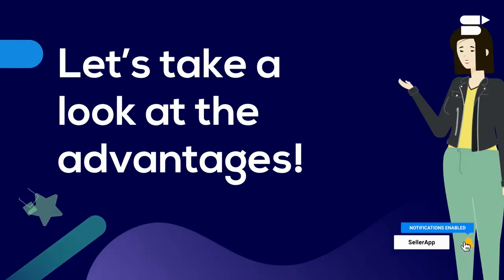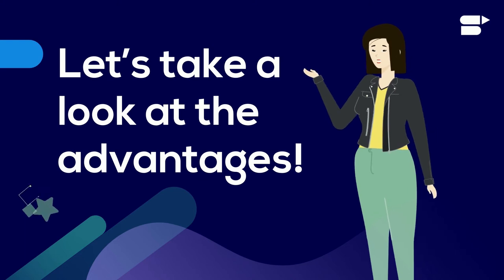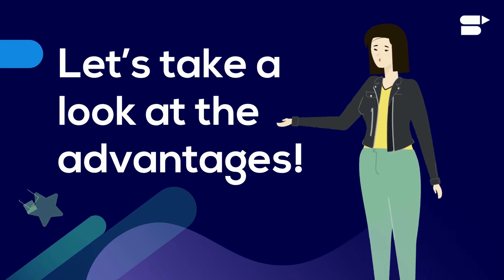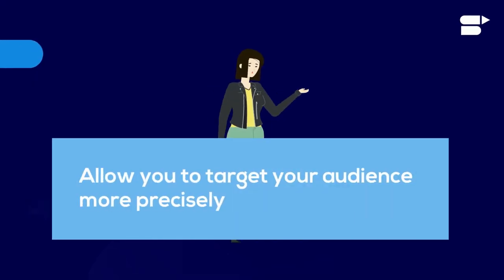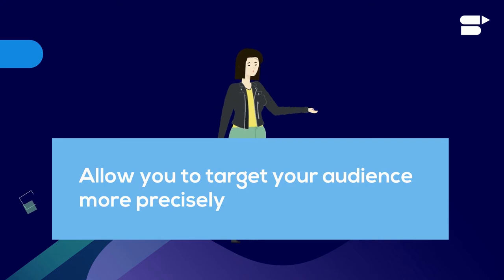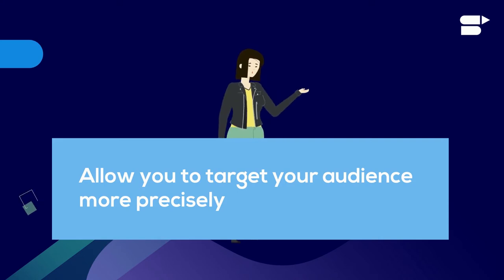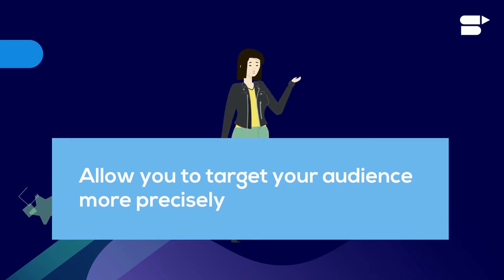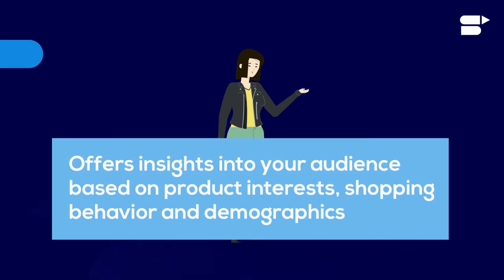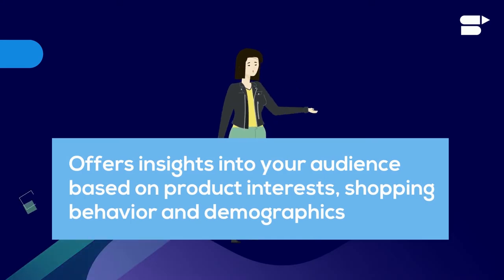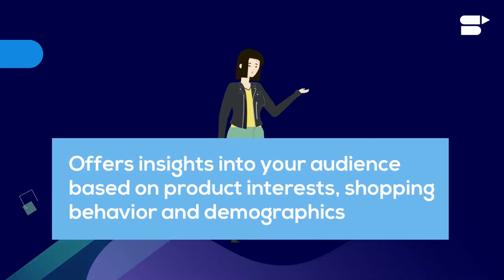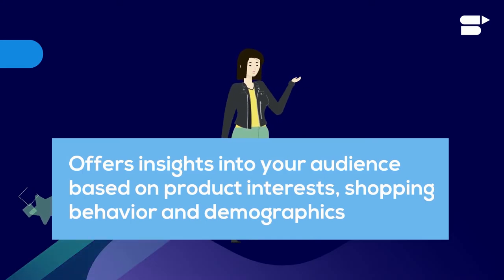Let's take a look at the advantages of using OTT advertisements to promote your Amazon products. Number 1: unlike traditional television ads, Amazon OTT ads allow you to target your audience more precisely. Number 2: Amazon DSP offers insights into your audience based on products' interest, shopping behavior, and demographics.